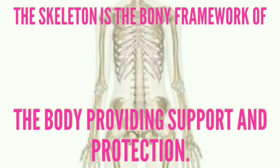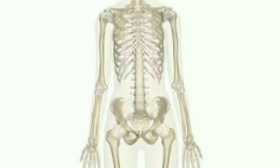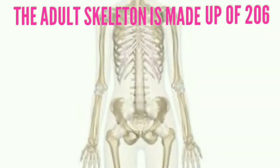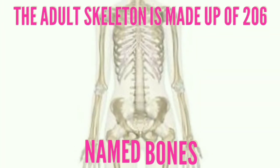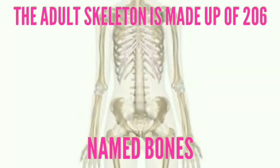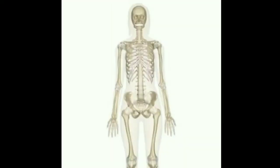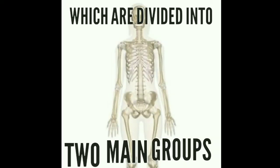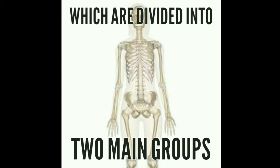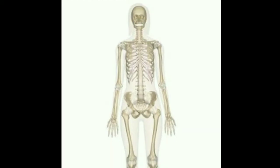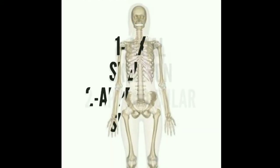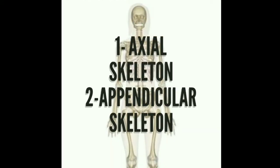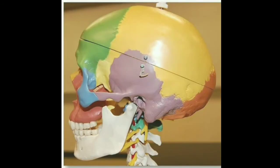The skeleton is the bony framework of the body, providing support and protection. The adult skeleton is made up of 206 named bones, which are divided into two main groups: the axial skeleton and the appendicular skeleton.